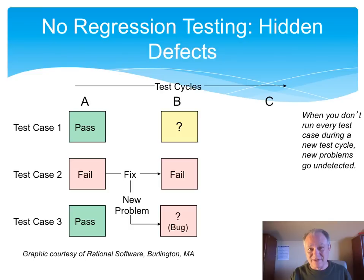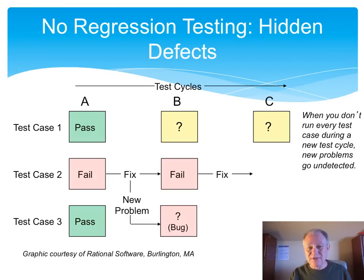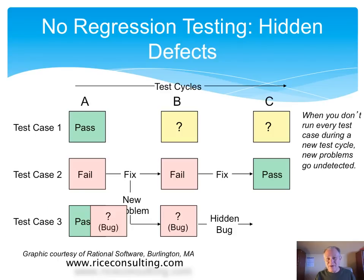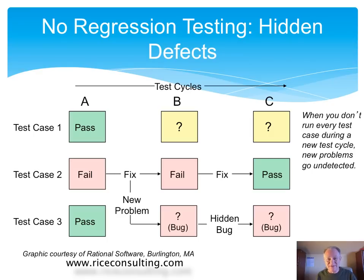You might think of this as a hidden bug. So we do another round of testing. We don't test the first case because we're only testing fixes. We do test the second case and learn that the fix did work — so we have a pass. But the third case, we don't know about because, once again, we didn't test it. In this scenario, we release the software to our customers or users, and they find the bug revealed by that functionality.